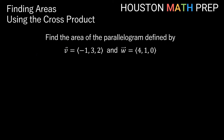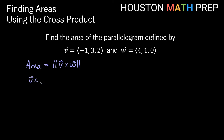Let's work through a couple of area examples. Find the area of the parallelogram defined by vector v = (-1, 3, 2) and vector w = (4, 1, 0). The area is going to be the magnitude of the cross product — the magnitude of v cross w. Let's first figure out what v cross w is.